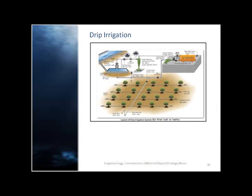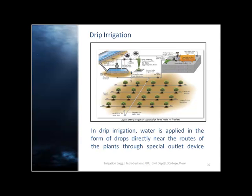The picture shows the layout of different drip irrigation systems. In drip irrigation, water is applied directly near the roots of the plants through a special outlet device called a dripper.